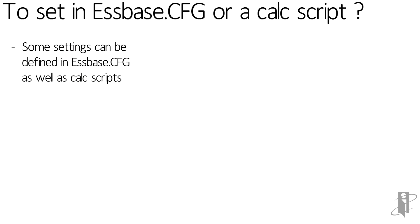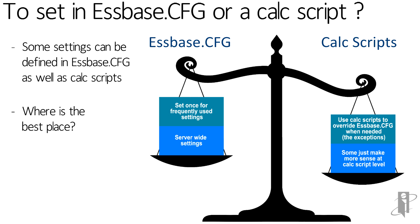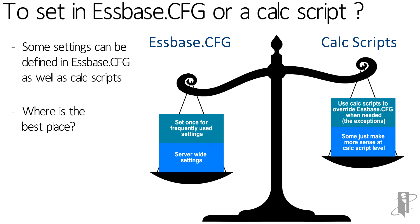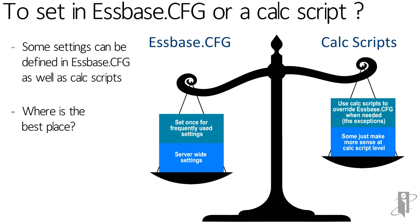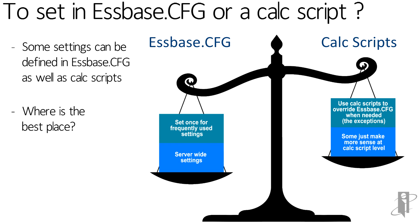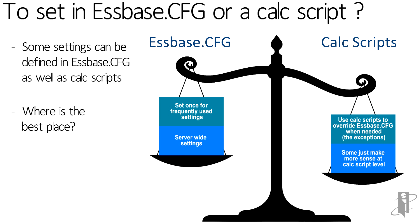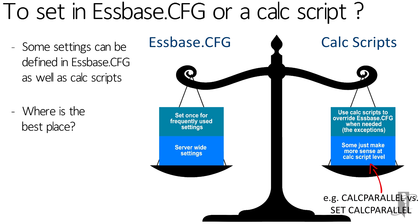There are some settings you can put into the sspace.cfg that you can also apply inside an sspace calc script. When would you use each one? Use the sspace.cfg for your most frequently used settings — things you want applied to the entire database, application, or server. If you need to override a setting for a specific calculation, do that within the calc script. Settings that apply to the entire server can only be done inside the sspace.cfg. The cfg is always the default; the calc script always overrides what's in the cfg.